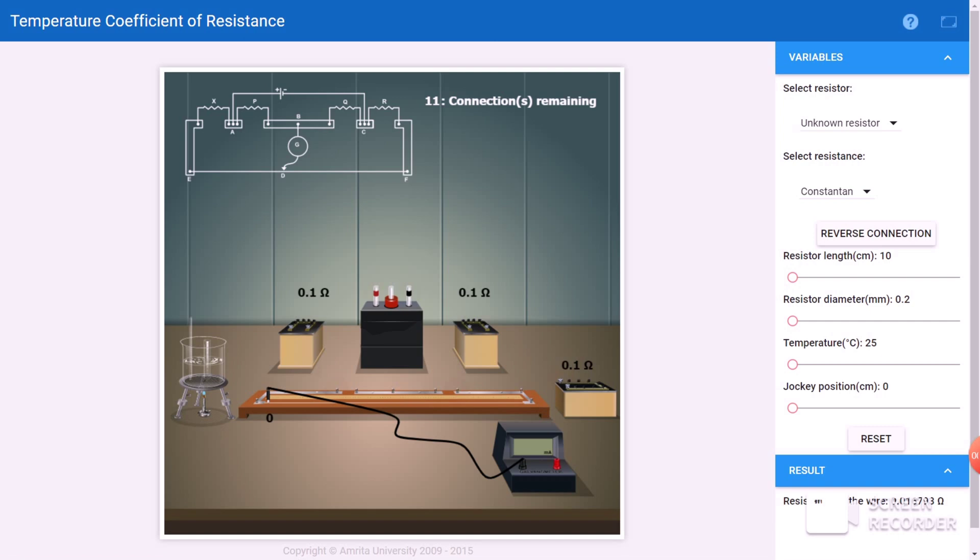So let's see in the virtual lab. First select unknown resistor, then make all the connections by connecting these wires. So now we have made all the connections as per the given diagram. Now resistor length is 10 cm, the resistor diameter is set to 0.2 mm. Let's take as it is.